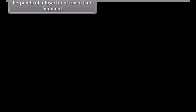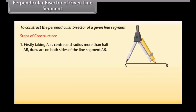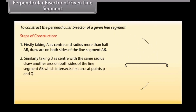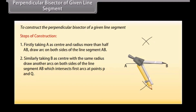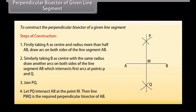Perpendicular bisector of a given line segment. Now we will learn to construct the perpendicular bisector of a given line segment. Let us take a line segment AB. We want to construct its perpendicular bisector. Firstly, taking A as center and radius more than half AB, draw arcs on both sides of the line segment AB. Similarly, taking B as center and with the same radius, draw another arc on both sides of AB, which intersects the first arcs at points P and Q. Now join P and Q. Let P and Q intersect AB at point M. Then line PMQ is the required perpendicular bisector of AB.